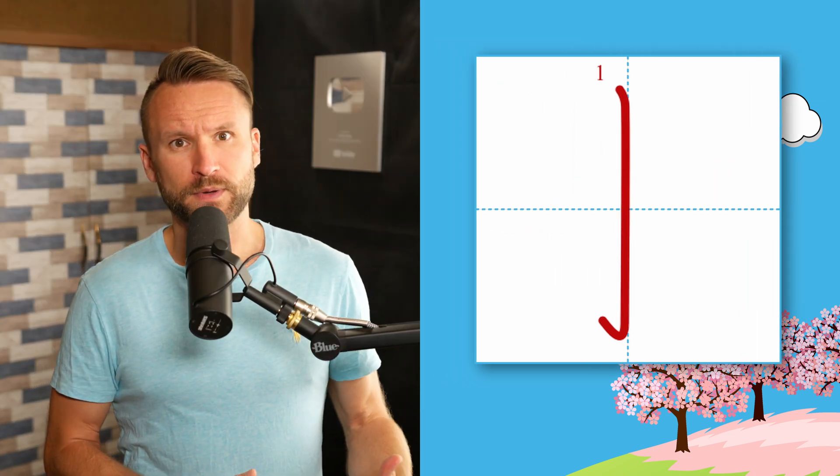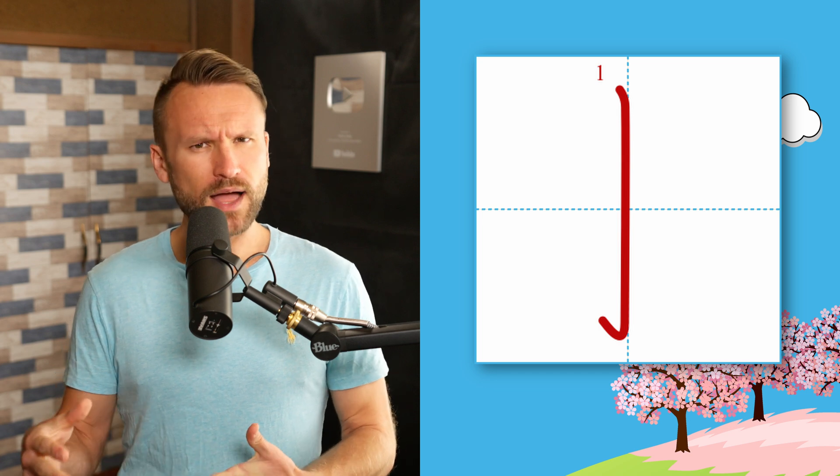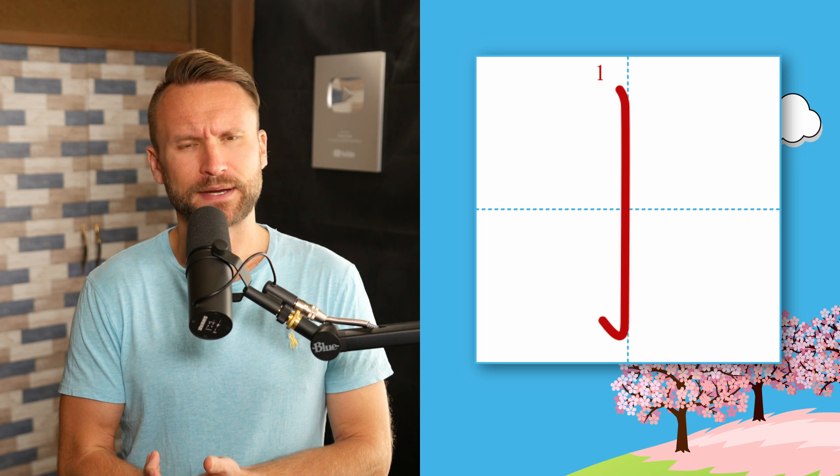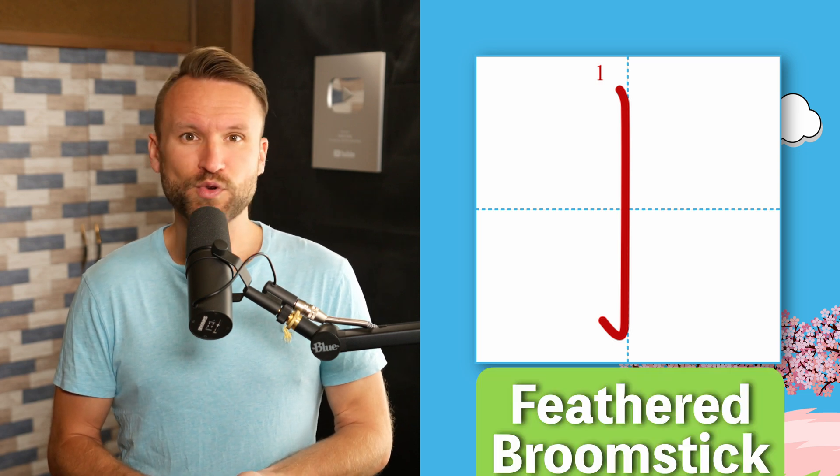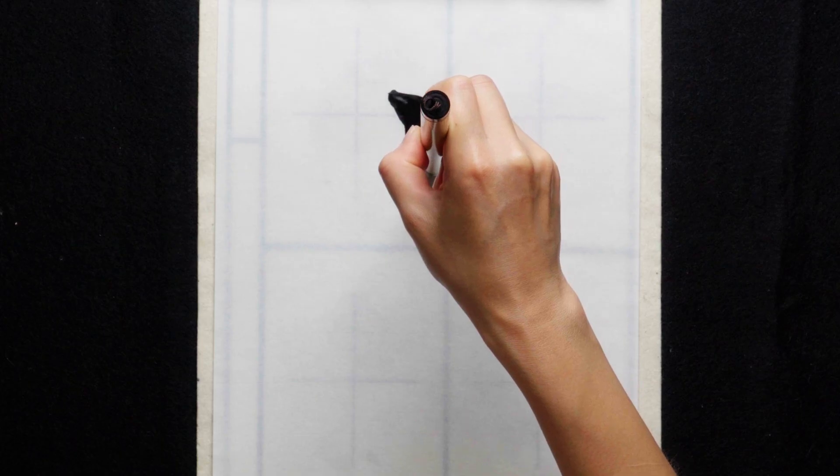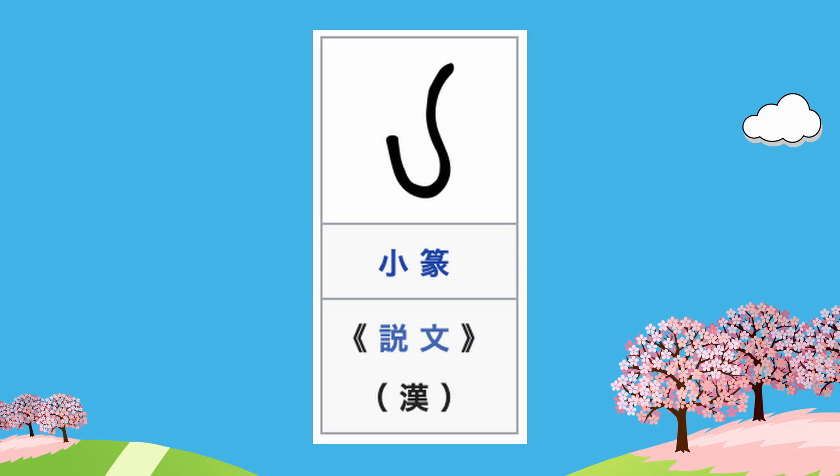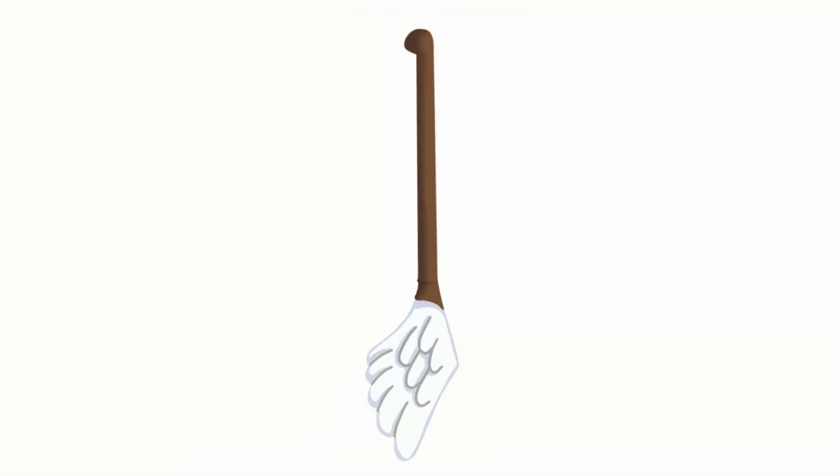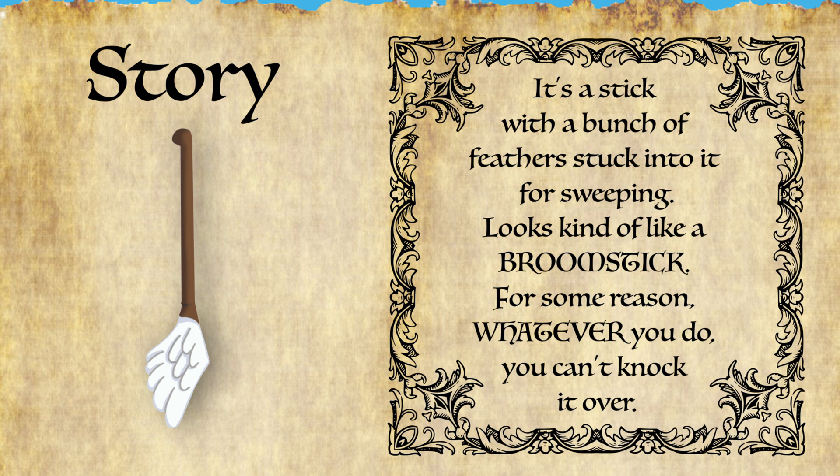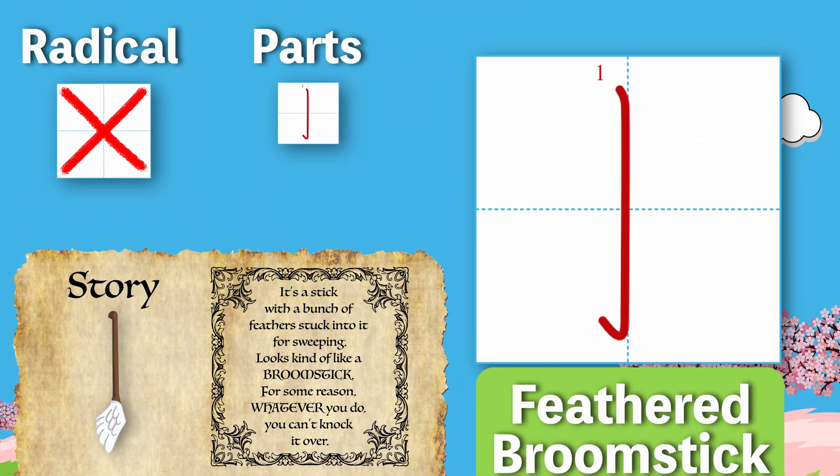Moving away from kanji for a moment, we have three new parts to learn about. This first one looks a lot like a staff radical except for the swish to the left at the bottom. This part takes the meaning of feathered broomstick radical. Radicals that aren't kanji don't have official radicals, and feathered broomstick is its only part. There's only one simple stroke here that sweeps out to the left at the end. Historically it apparently used to be a crochet needle, but even in Japanese the modern meaning is feathered broomstick. So for our story we have: it's a stick with a bunch of feathers stuck into it for sweeping. Looks kind of like a broomstick. For some reason, whatever you do, you can't knock it over. Be sure to imagine yourself really trying to knock it over with all your might, despite it standing on its feathers. It just won't fall over.